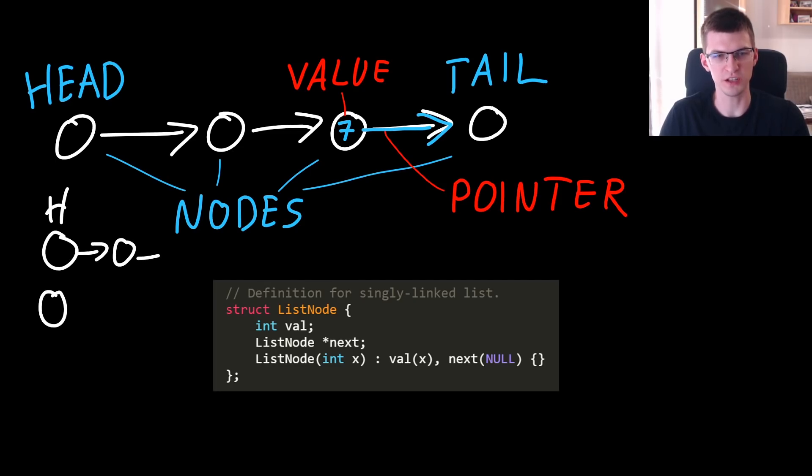To the next one and eventually tail has pointer to null value, its pointer is set as null and then you know this is the last node in a list.